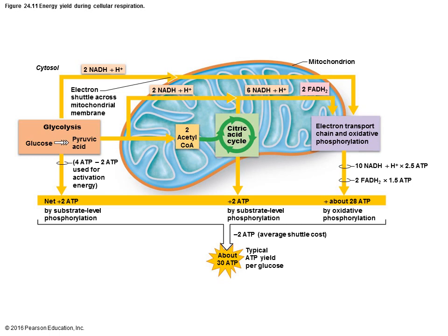The acetyl-CoA flows into the citric acid cycle. Ultimately, you produce two more ATPs, generate six NADHs and two FADH2. FADH2 is another electron carrier. All of those NADHs — ten total — and the two FADH2s all end up at what we call the electron transport chain and oxidative phosphorylation. This is where most of your ATP is going to be generated. The citric acid cycle generated two, and glycolysis generated two.